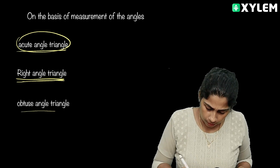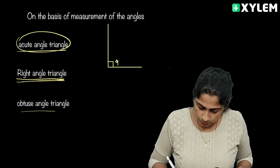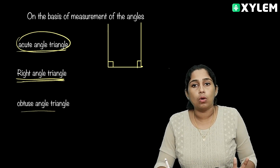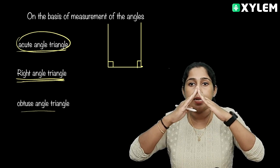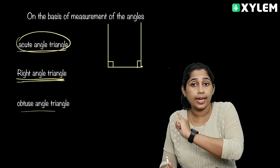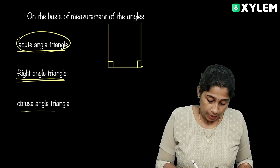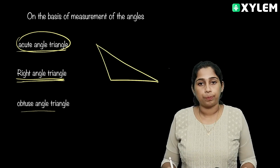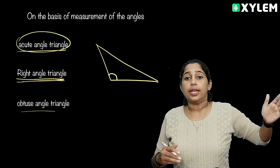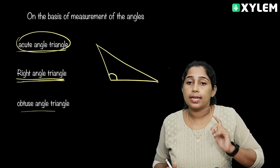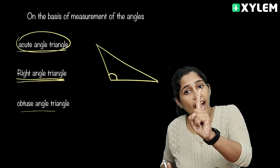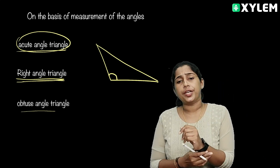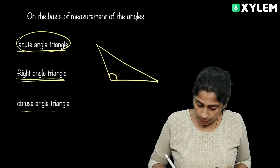This angle is 90 degrees — that's a Right Angle Triangle. Now, this is the Obtuse Angle Triangle. If you look at this triangle, one angle is greater than 90 degrees and less than 180 degrees. This is the condition: one angle greater than 90 makes it an Obtuse Angle Triangle.